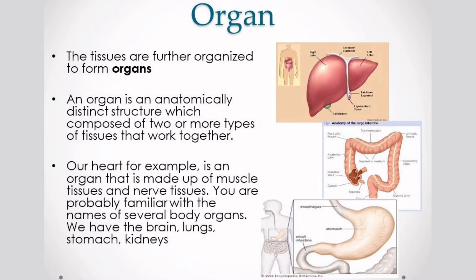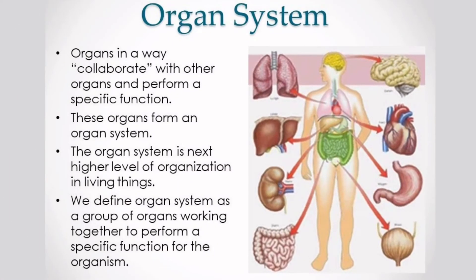We have the brain, lungs, stomach, and kidney. Similar to cells and tissue, organs rarely work by themselves. Organs collaborate with other organs and perform a specific function. This forms an organ system. The organ system is the next higher level of organization in living things, defined as a group of organs working together to perform a specific function for an organism.